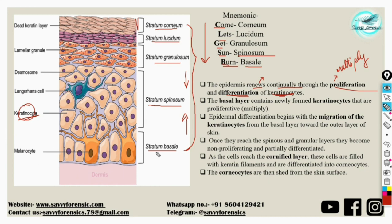Keratinocytes are present in the basal layer and through proliferation and differentiation they migrate to the upper layers. When they reach the stratum granulosum and stratum spinosum, they lose their ability to proliferate and differentiate. As these cells reach the stratum corneum layer, they become filled with keratin filaments and differentiate into corneocytes. The stratum corneum consists of cells called corneocytes, which are dead cells that lose their organelles and nucleus through differentiation.